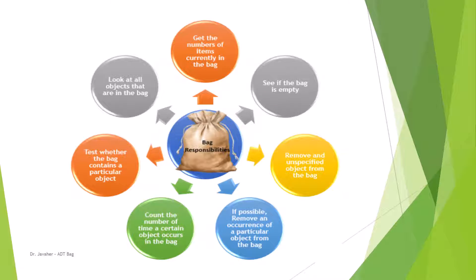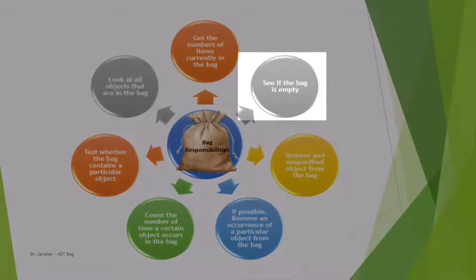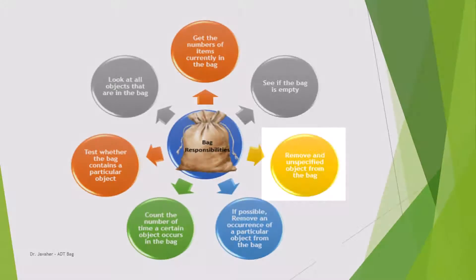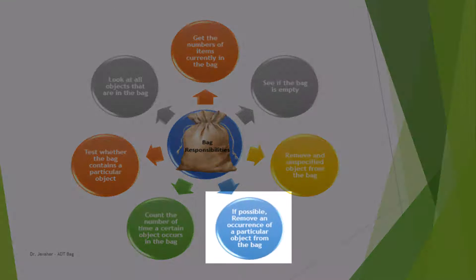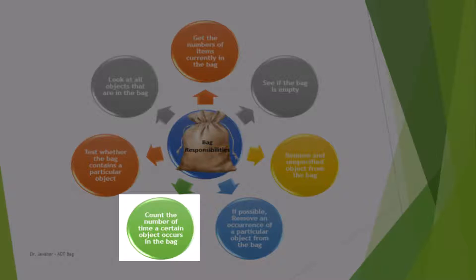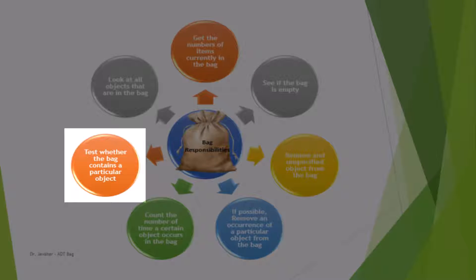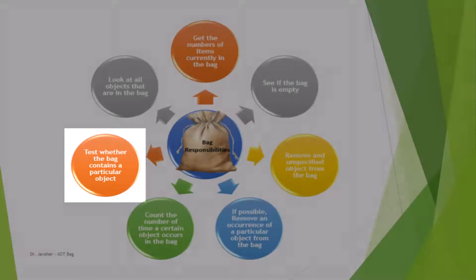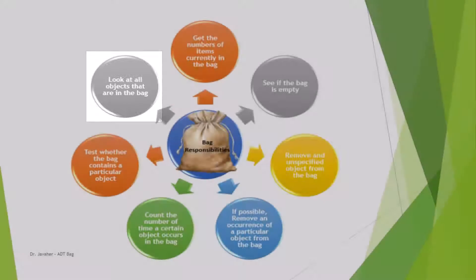Now let's take a look at some other responsibilities. We can get the number of items currently in the bag and see if the bag is empty or not. We can remove unspecified objects from the bag, or remove one occurrence of a particular object. We can count the number of times a certain object occurs, test whether the bag contains a particular object, and look at all objects that are in the bag.